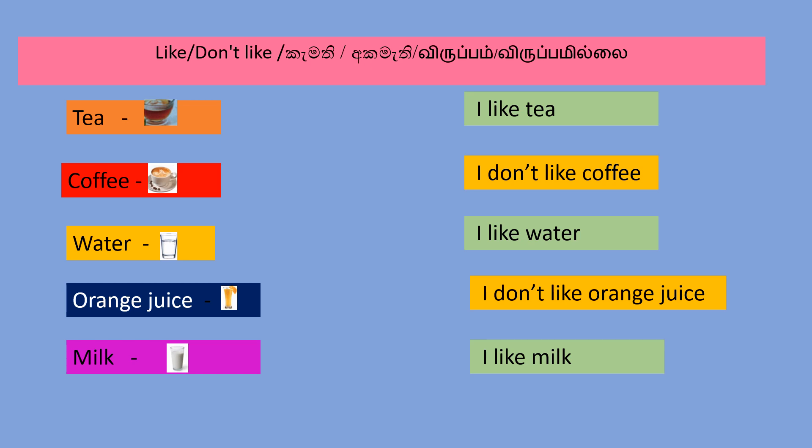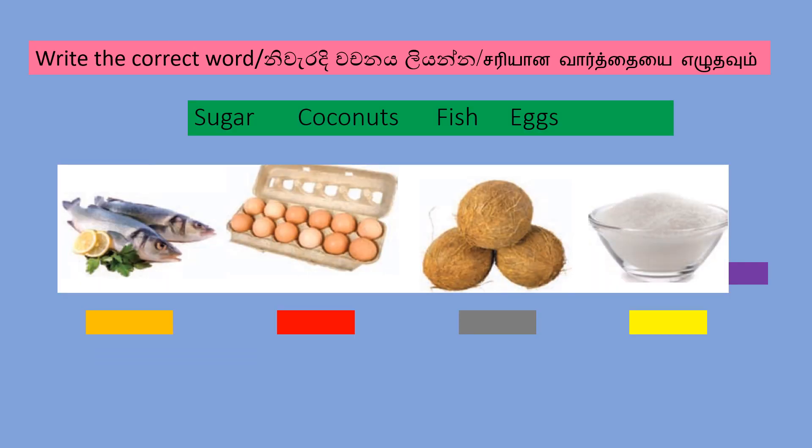Milk — I like milk. Write the correct word. Sugar, coconuts, fish, eggs.